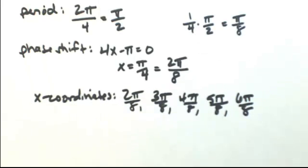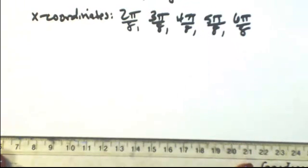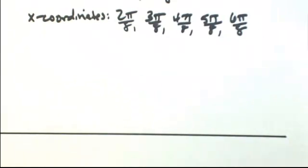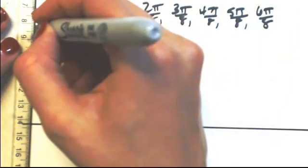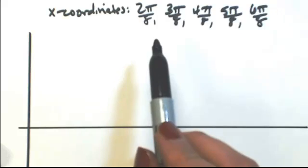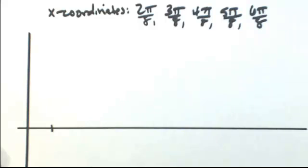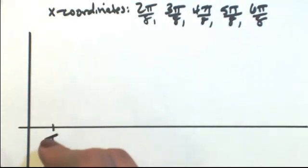Let me go ahead and mark out my x-axis. Since the first coordinate is positive, I'll put my y-axis on the left. So mark out wherever you want the first one to be. So this is two pi over eight, in other words, pi over four.